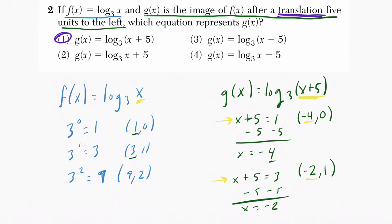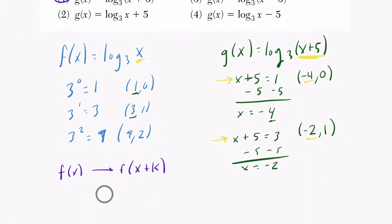And in general, if you have a function, I'll change colors here. So if you have some function f(x), and then you want to translate it, let's say if f(x) becomes f of x plus k. So we're adding to the input. If k is positive, if k is greater than 0, then we move left k units.